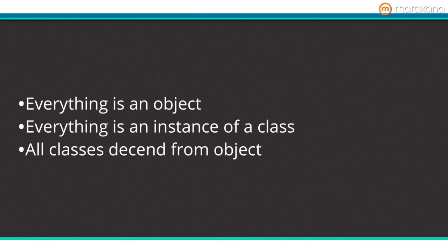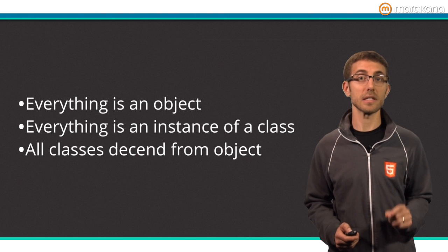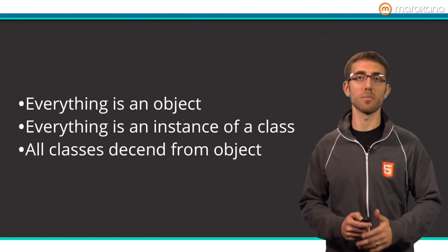When we say Dart is a class-based object-oriented programming language, we mean it. Everything in Dart is an object, everything is an instance of a class, and all classes descend from object. Dart is a single inheritance language, which means a class can inherit from or extend from only one other class.